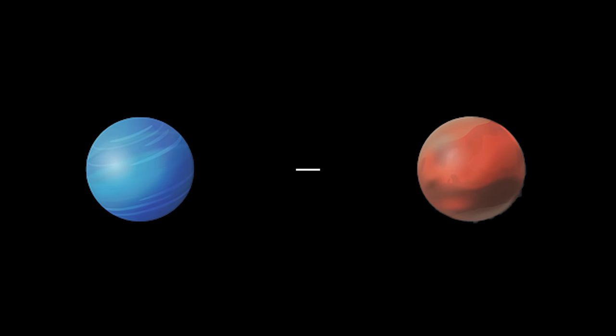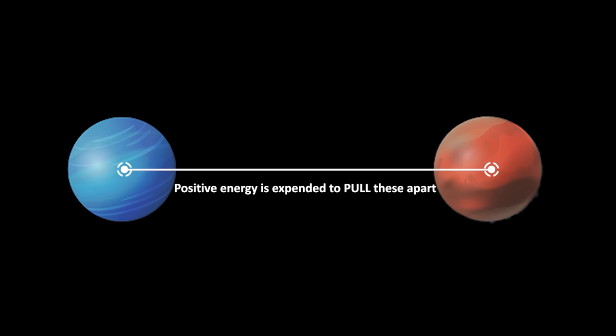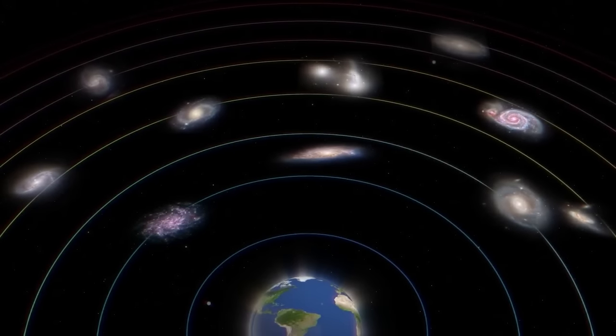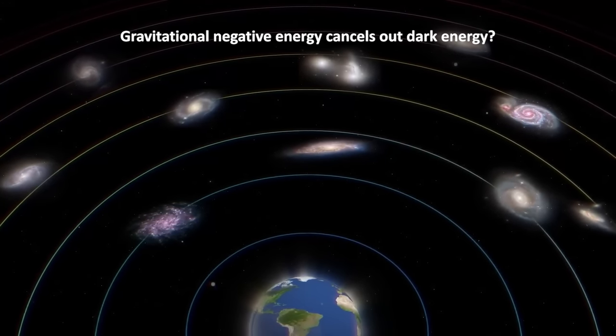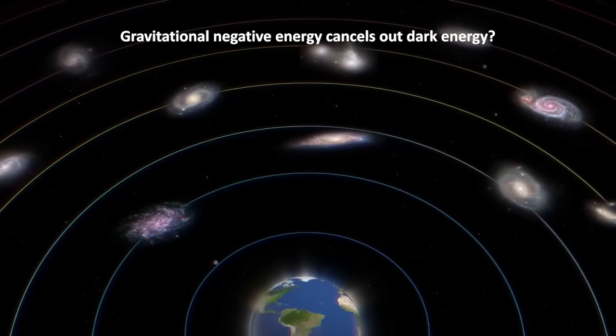Legendary physicist Stephen Hawking explained it this way, When you pull two objects apart, you need to expend energy to overcome the gravity that pulls them together. Since it takes positive energy to separate them, gravity must be negative energy. And this increasing negative energy perfectly cancels increasing dark energy, some argue.